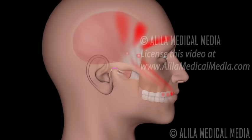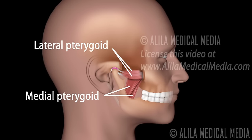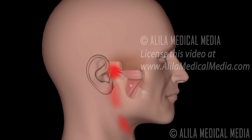Trigger points in the temporalis are also associated with headache and toothache from upper teeth. The main culprits of myofascial pain in the TMJ area are the pterygoid muscles. Trigger points in the medial pterygoid refer pain to the TMJ region in front of the ear, inside the mouth, and upper outside of the neck, and may also manifest as sore throat and difficulty swallowing. Pain from lateral pterygoid trigger points can be felt in front of the ear and on the upper jaw.